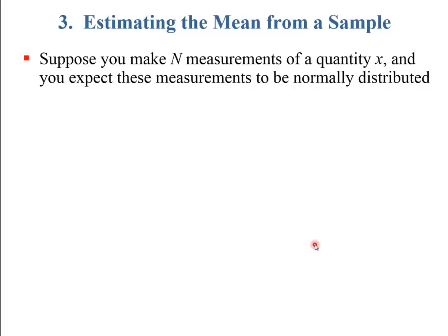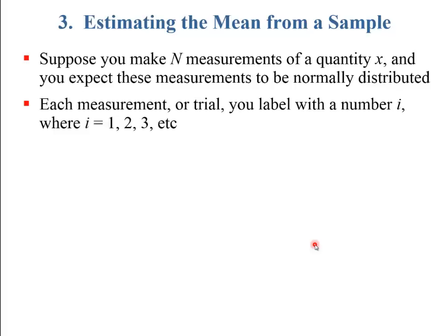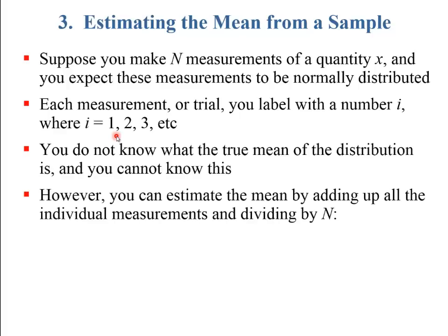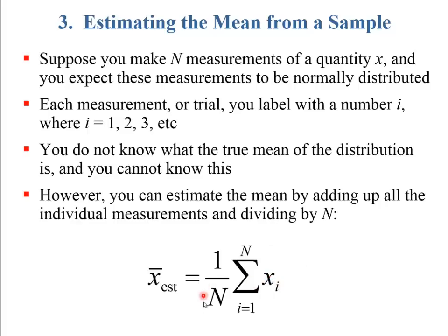If you make a bunch of measurements of the same quantity, they'll all be a little bit different, and you expect them to be normally distributed. You can label your values x sub 1, x sub 2, x sub 3, etc. You don't know the true value because no measurement has infinite precision, but you can estimate it by adding up all the measurements and dividing by the number of measurements — that's the mean. The estimated mean is the sum from i equals 1 to n of x sub i, divided by n.